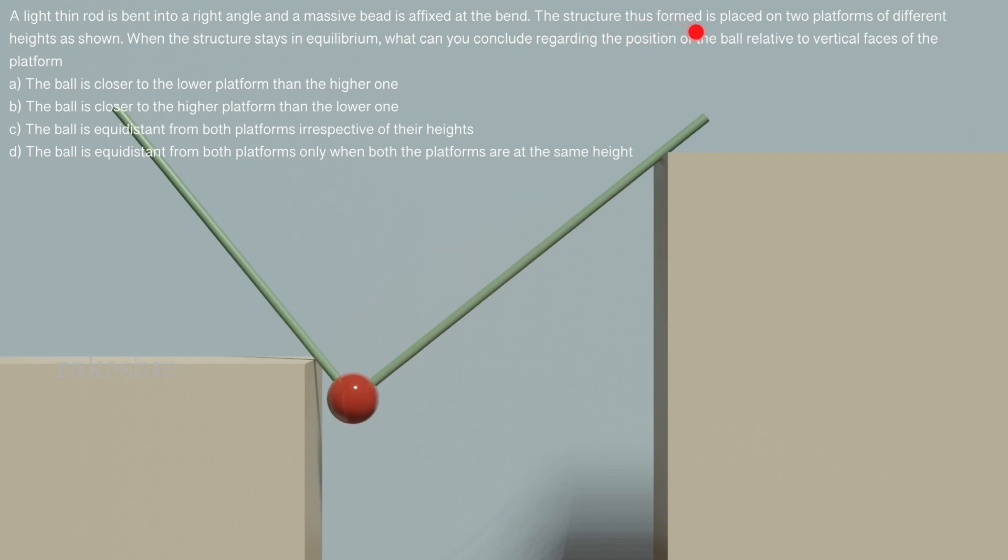The structure thus formed is placed on two platforms of different heights as shown. So this structure here is placed on two platforms that you can see here which are of different heights.